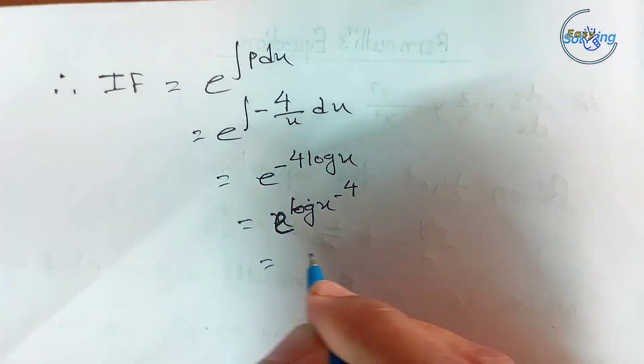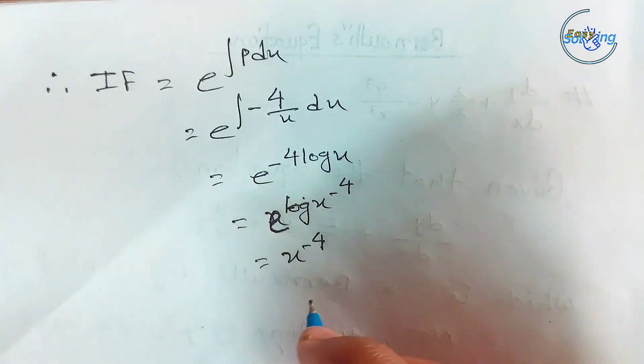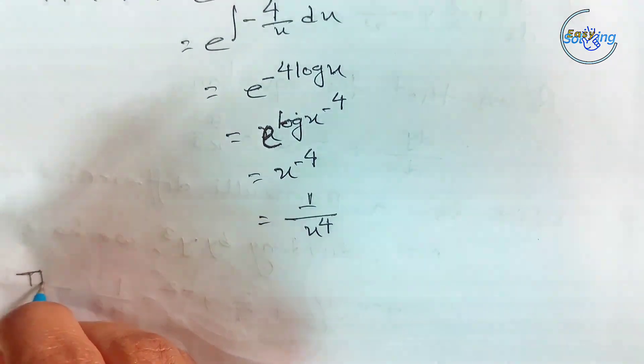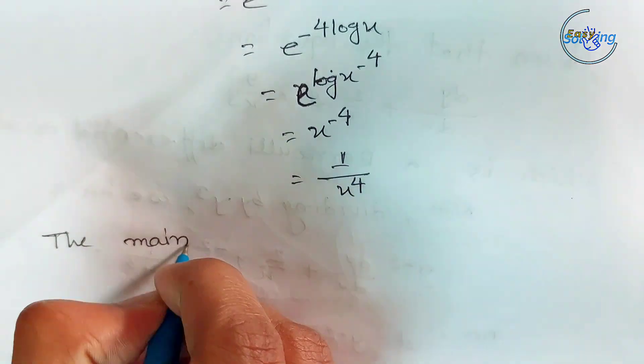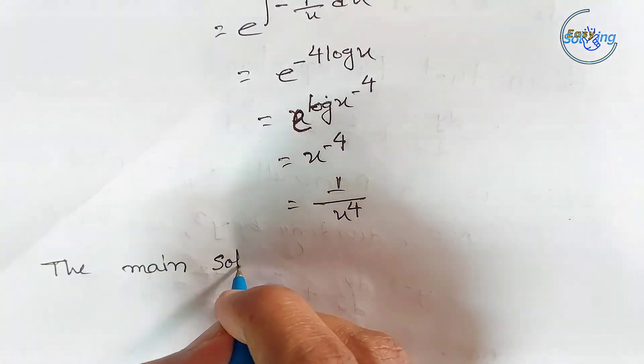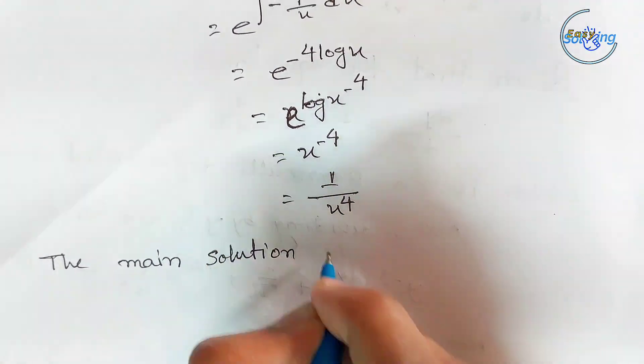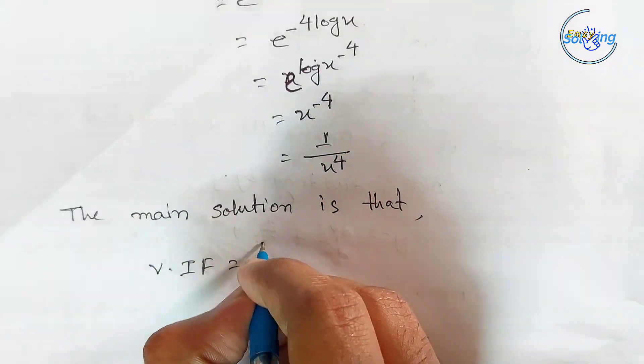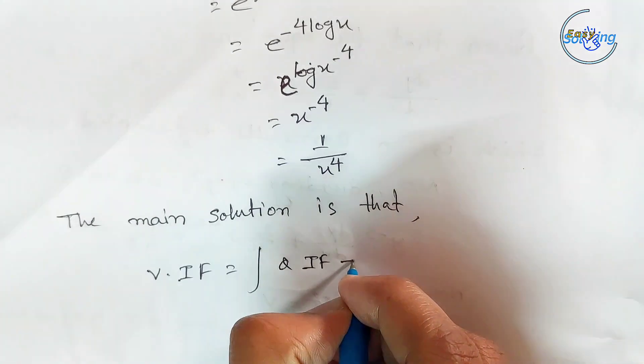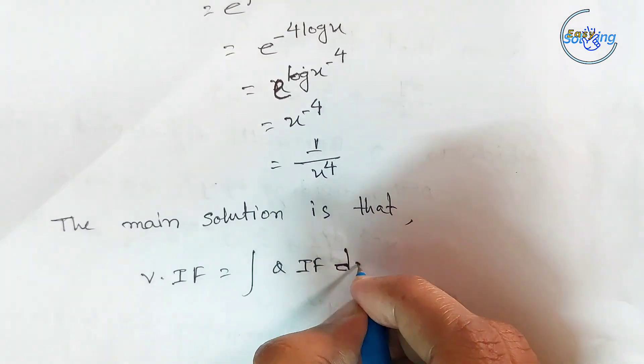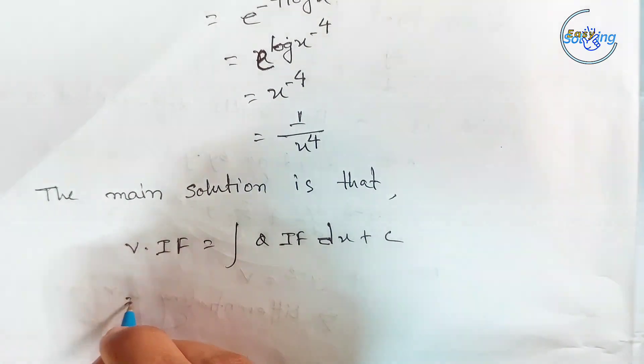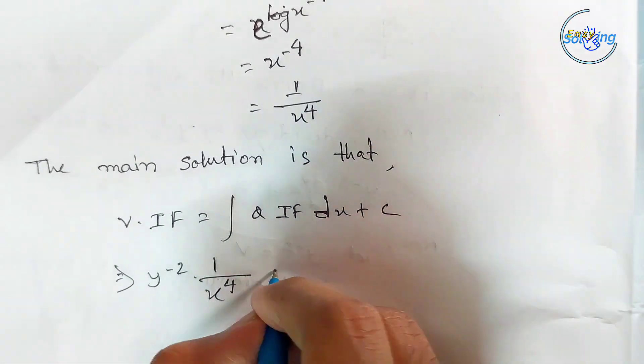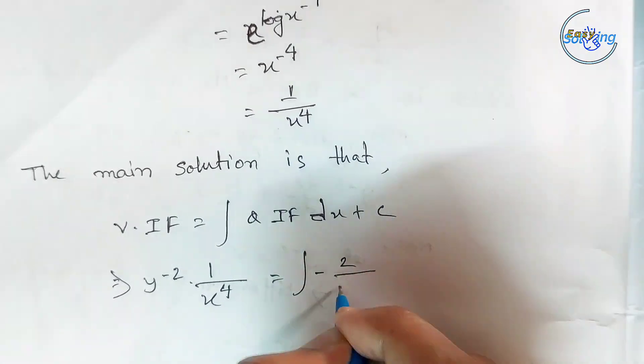The solution is V·IF = ∫Q·IF dx + C. Substituting the values: y^(-2)·(1/x⁴) = ∫(-2/x³)·(1/x⁴) dx + C